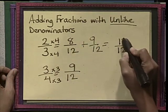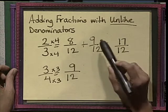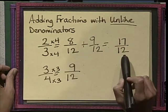So we don't add the denominator, we only add the numerator. 8 plus 9 is 17. So you only add the top numbers, which is the numerator, and the denominator stays the same.